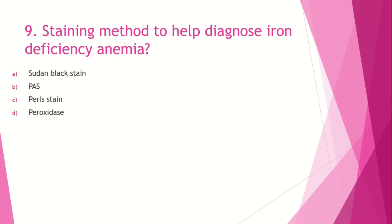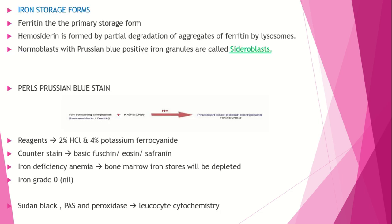Question number 9: Staining method to help diagnose iron deficiency anemia. Option A, Sudan Black stain; option B, PAS (Periodic Acid Schiff); option C, Pearl stain; option D, Peroxidase stain. The answer is Pearl stain — used to evaluate bone marrow iron stores. Iron is mainly stored as ferritin. The basic principle: iron-containing compounds react with potassium ferrocyanide in the presence of hydrochloric acid to produce a Prussian blue colored compound.